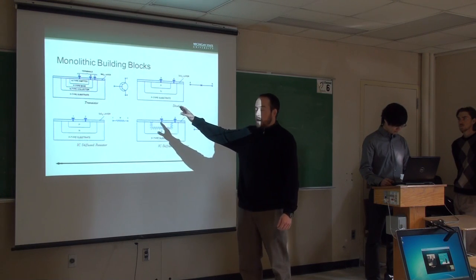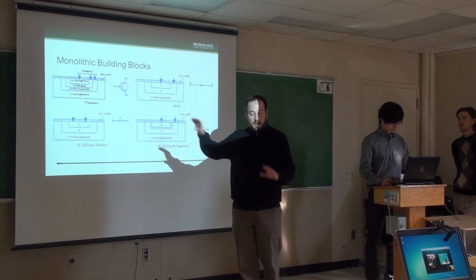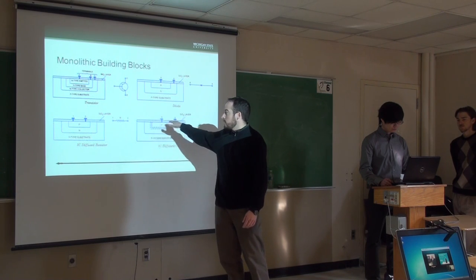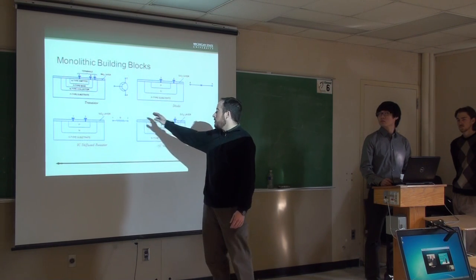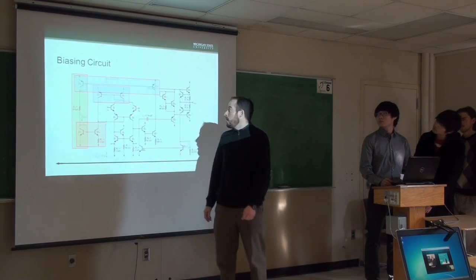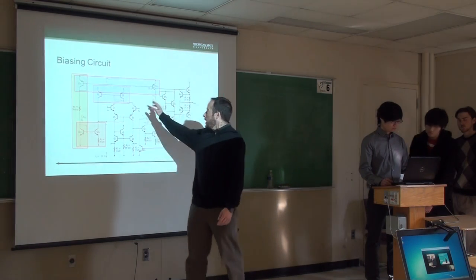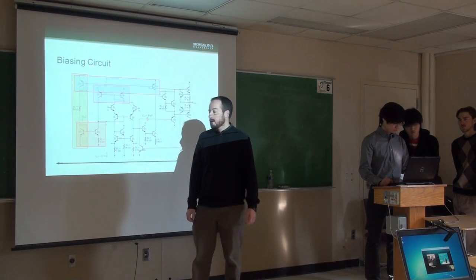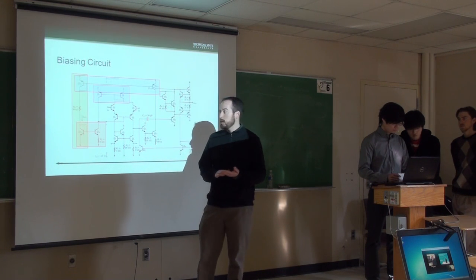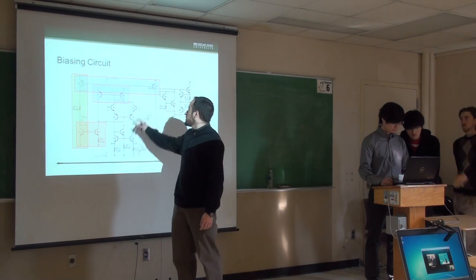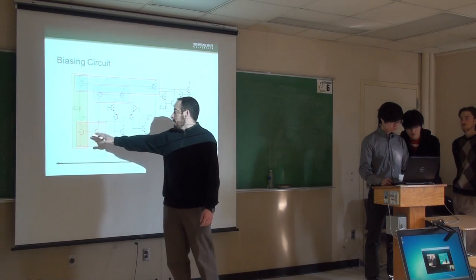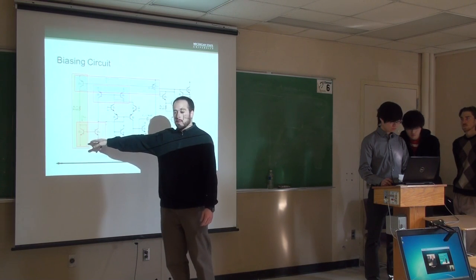First, let's talk about monolithic building blocks. These are not discrete components — they're layers of dual semiconductor material with metalization on the surface, including transistors, diodes, resistors, and capacitors. For the biasing circuit, when two transistors are connected at the base, they're called current mirrors, which can be thought of as current-controlled current sources. Of special relevance is this multi-collector lateral PNP transistor, which forms a special type of current mirror called a Widlar mirror, made distinct by a resistor off the emitter.